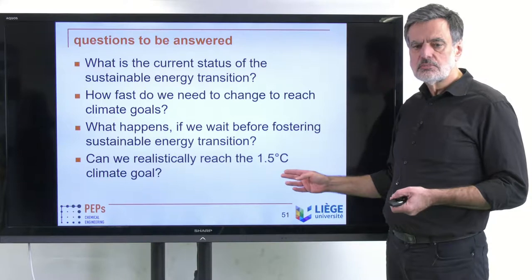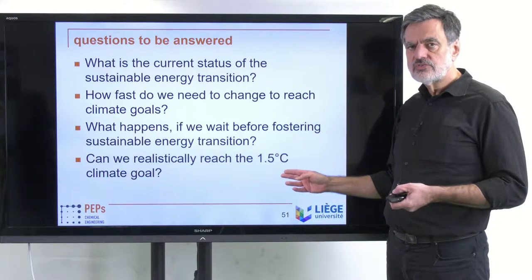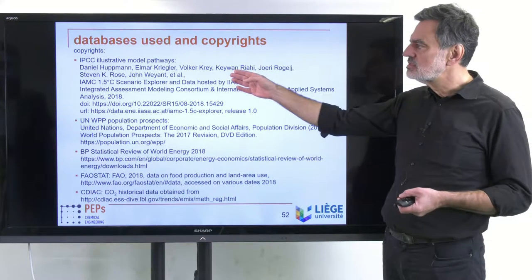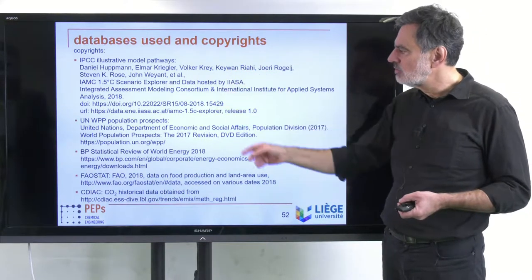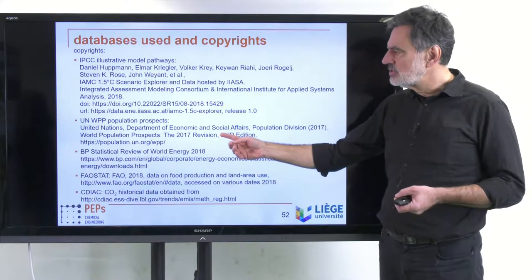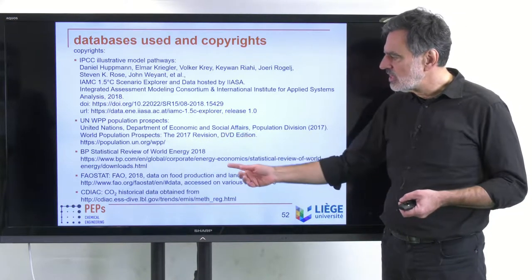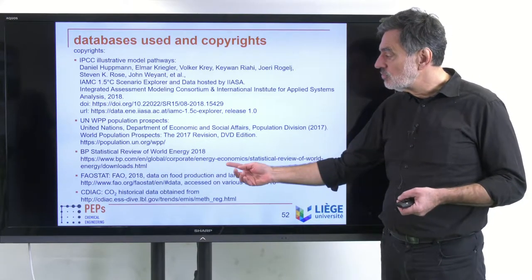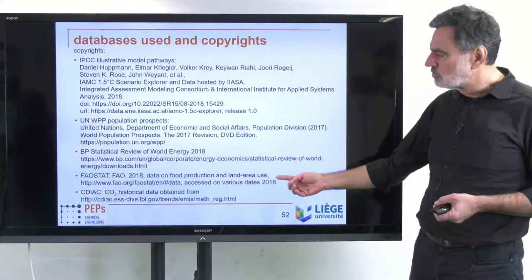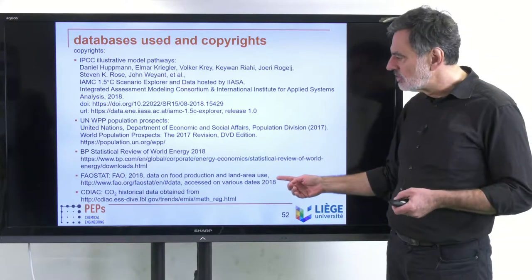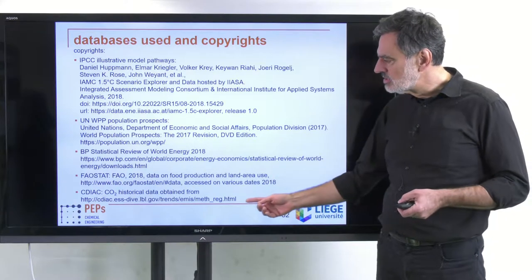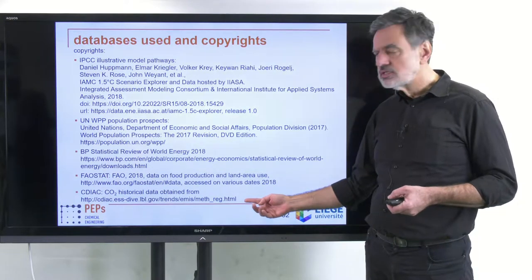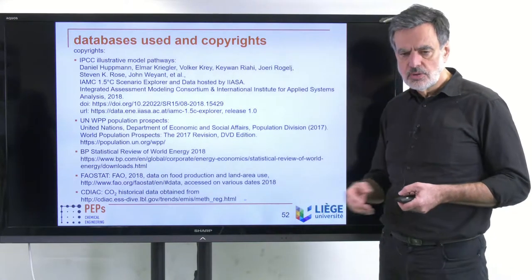To answer these questions I need a lot of references and data. On one hand, it's the IPCC illustrative model pathways, which can be downloaded. Then the United Nations world population prospects, which are publicly available. For energy I'm using the BP statistics, the Statistical Review of World Energy 2018. For crop production and land area I'm using the FAOSTAT database, and for CO2 data I'm using the CDIAC historical CO2 data, which are also publicly available.